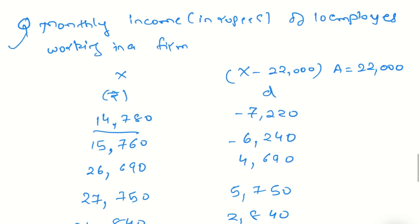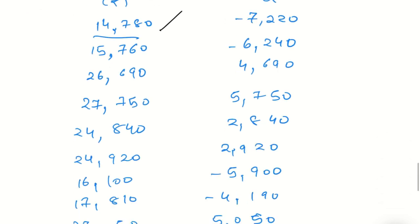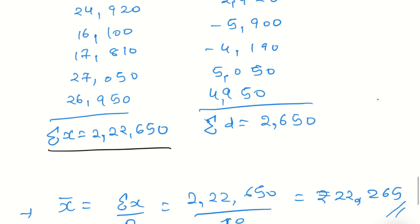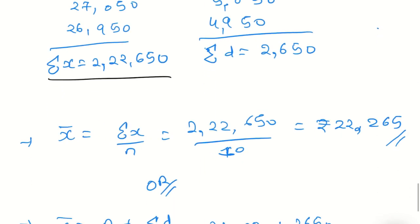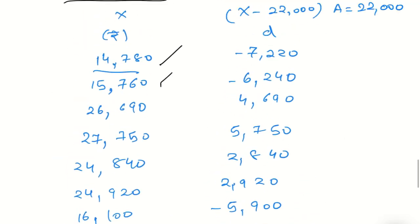Let's take an example. Monthly income in rupees of 10 employees working in a firm. We have 10 observations. The addition sigma x is 22,650. Now using the direct method formula, x-bar equals sigma x upon n. Sigma x is 22,650 divided by 10 observations, which equals 2,265.